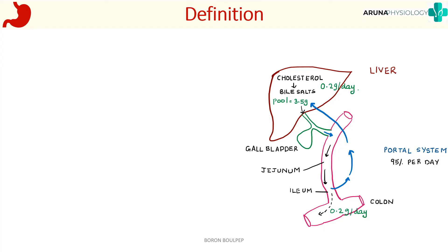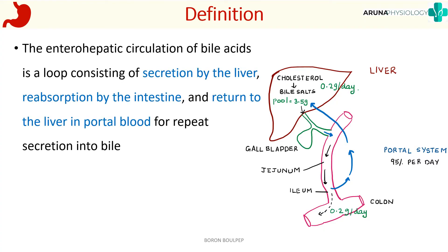First of all, what is the definition? Enterohepatic circulation of bile acids is a loop consisting of secretion by the liver, absorption by the intestine, and return to the liver in portal blood for repeat secretion into the bile.